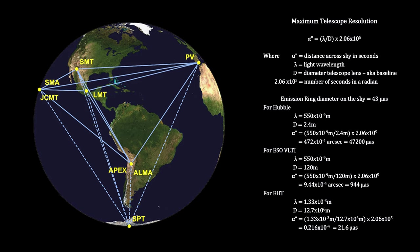These locations included volcanoes in Hawaii and Mexico, mountains in Arizona, Spain, and Chile, and one in Antarctica. Baseline lengths between telescopes vary, but the resulting effective combined baseline is close to the diameter of the Earth.